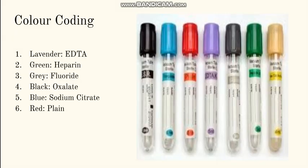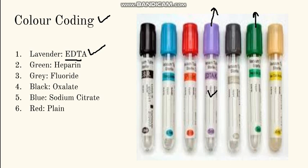Color coding of the tubes is important because whenever you receive a blood sample, you have to keep it in the color-coded tube required for the test. For routine hematological investigations, you use a lavender or purple-topped tube — this contains EDTA. The green tube contains heparin, so if sending blood for immunophenotyping use this tube. The gray-topped tube contains sodium fluoride and is used for blood glucose estimation. The red tube is plain and contains no anticoagulant. The blue tube contains sodium citrate, and the black tube contains double oxalate.